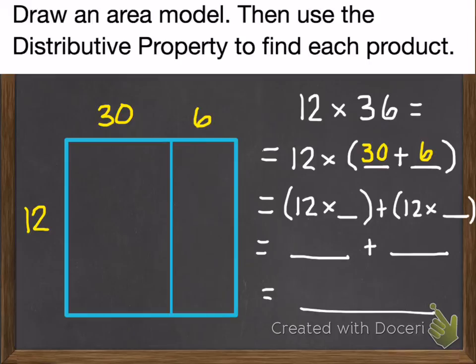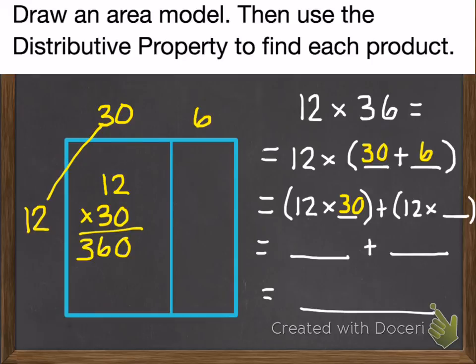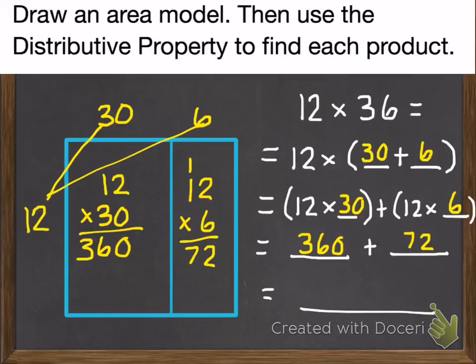Then, in our next line, we're going to multiply that 12 times each of those numbers. So 12 times 30 will be first. We get 360 for that. And next we multiply the 12 times the 6. 12 times 6 equals 72. And add those together. You should have gotten 432.